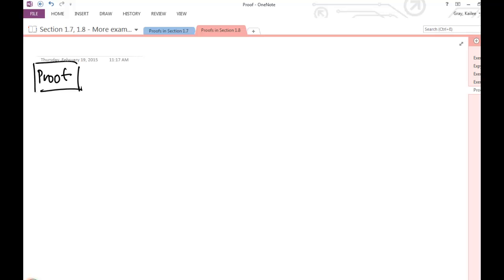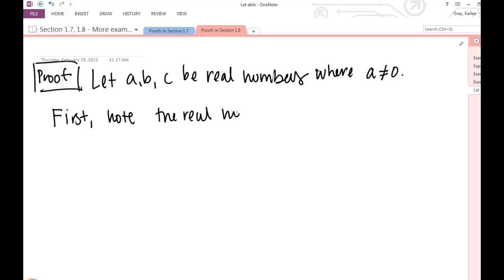I want to set it up, make sure that all my variables are clearly defined. So I'm going to say, let a, b, c be real numbers where a is nonzero. Now remember we don't know anything about x yet, so it doesn't really make sense to try to declare anything about x right now. So let's start with our existence portion. Let's kind of square it off here. So first, note the real number—what was that real number that satisfied our equation? c minus b over a.